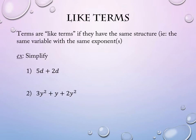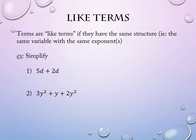x and y are not like terms, but neither are x and x squared. They have to match both the letter being used and the exponent if there is one. So when we're looking for things that can combine, we're looking for things that already are alike.